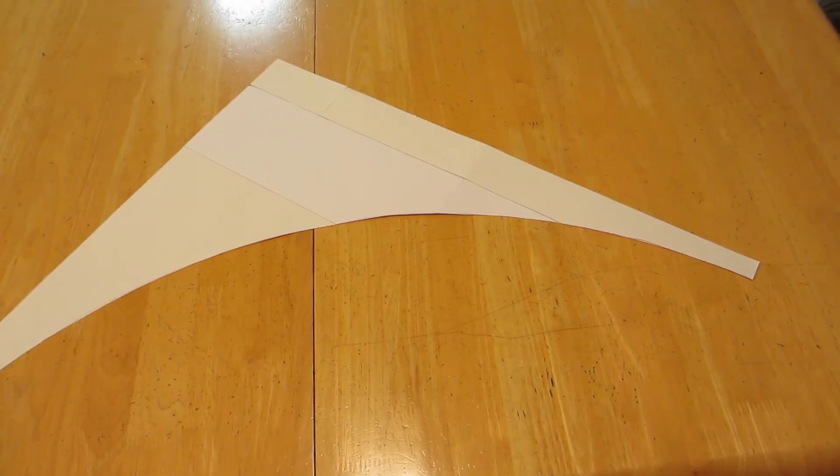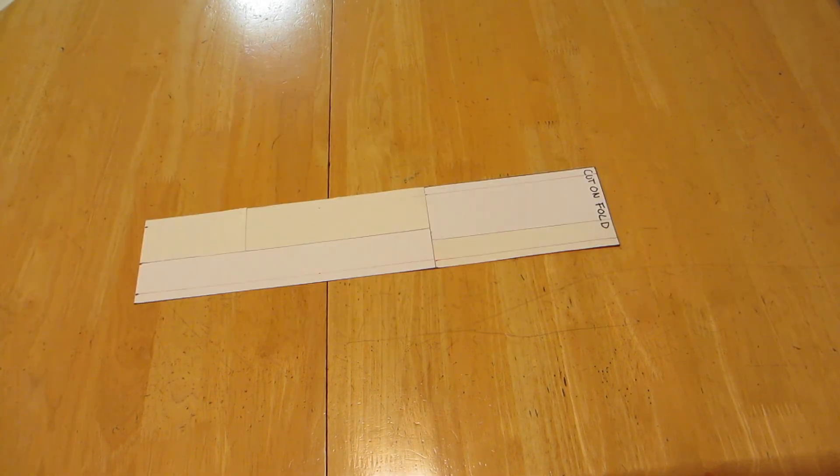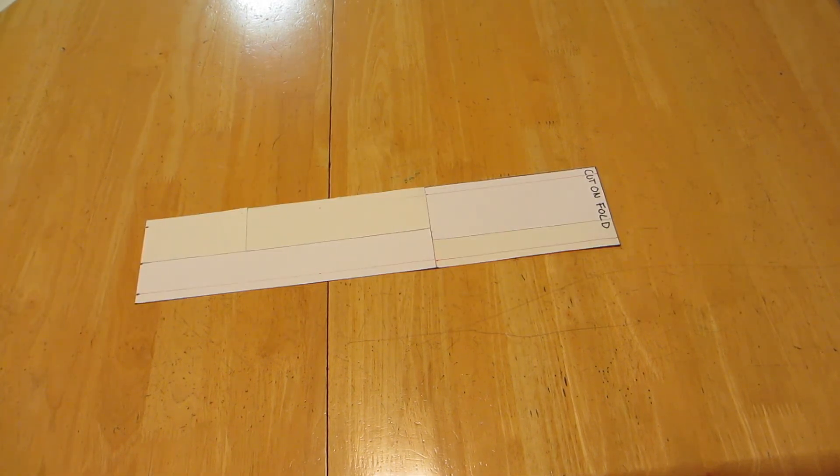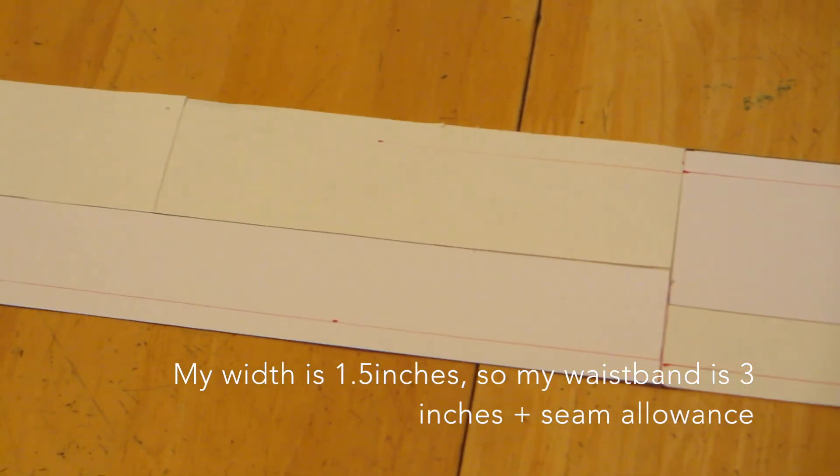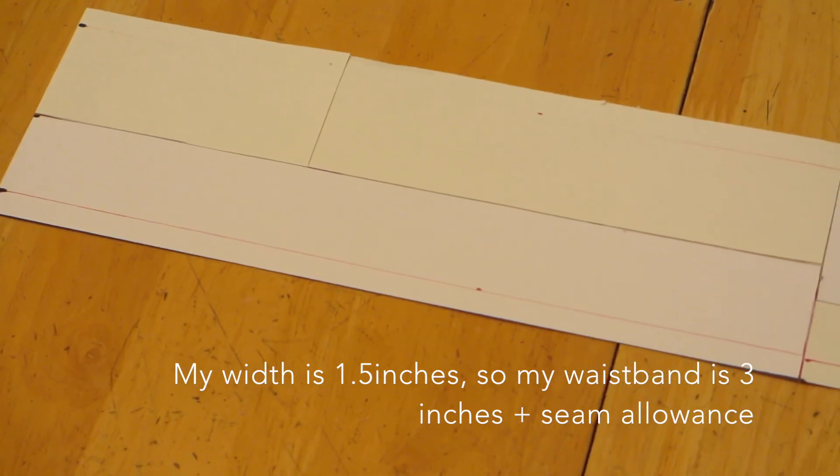Next, using the scrap piece of paper left over, we're going to make the waistband which is just a rectangle which is going to be the length of your waist measurement divided by 2 plus a half inch for seam allowance. And then as wide as you want your waistband to be, multiplied by 2 with your seam allowance that's added.